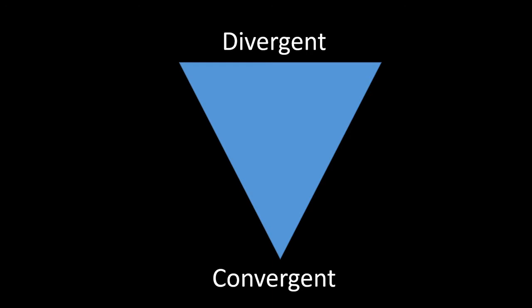It's really important to think of both components in science. Divergence — the ability to have a creative and open-ended mindset — needs to be balanced with convergence.